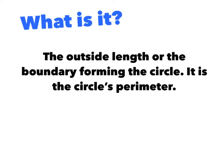Okay, a reminder, what is circumference? Circumference is the outside length or boundary forming the circle. It's the circle's perimeter. So if I had a circle here, the circumference would be the perimeter from here all the way around the outside. That's the circumference.